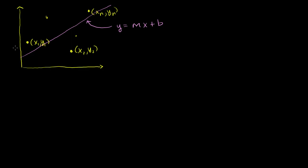Let me just review what those squared distances are — sometimes called the squared error. This is the error between the line and point 1, so I'll call that error 1. This is the error between the line and point 2 — error 2. This is the error between the line and point n. So if you wanted the total squared error between the points and the line,